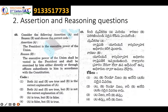Next is the assertion and reasoning question type. For example, the assertion is: 'The executive power of the union' — referring to Article 53 — 'the executive power of the union shall be vested in the President and shall be exercised by him either directly or through officers subordinate to him in accordance with the Constitution.'